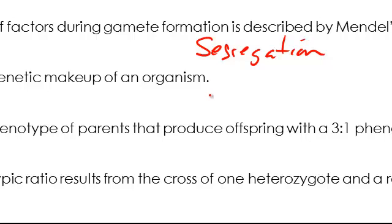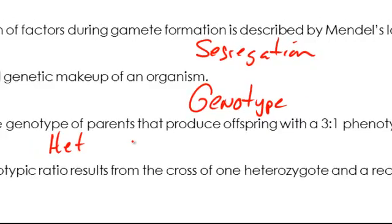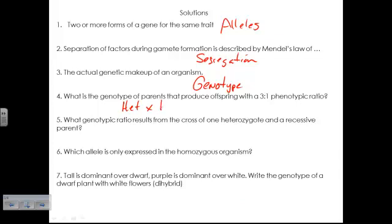Actual genetic makeup of an organism is referred to as the genotype, it's the genes that the organism has. What is the genotype of parents that produce offspring with a 3 to 1 phenotypic ratio? This is a monohybrid cross, it's one of our six representatives, and the genotype of the parents that produce this phenotypic ratio is heterozygous times heterozygous.